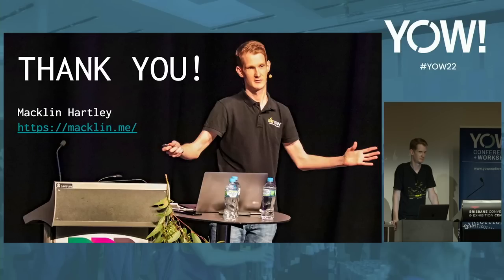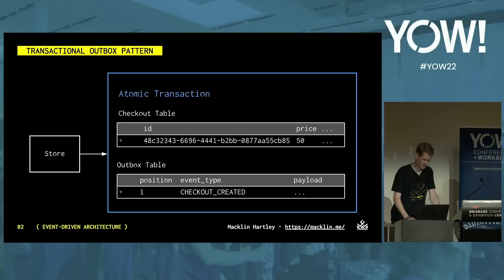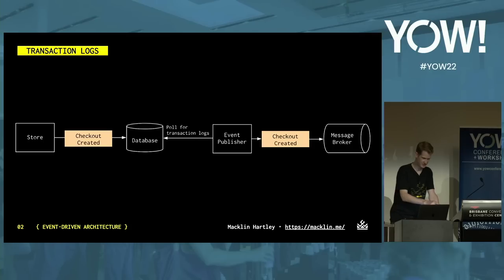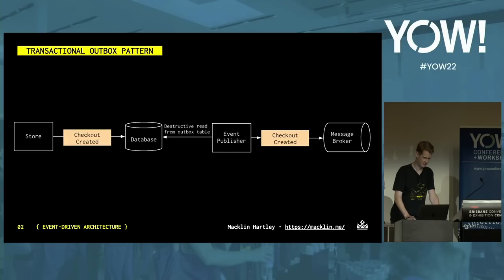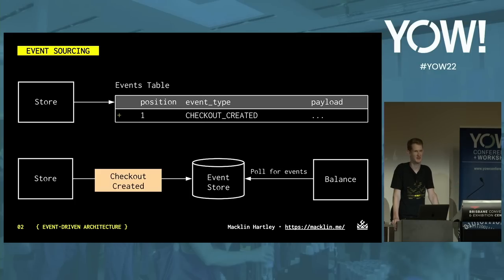Where does a publisher-subscriber model fit into this? When we talk about event-driven architectures, that's one of the most common communication models. You can really append it to any of these models — they produce an event. In this case we have a message broker, but if we wanted to publish those events out for other things to look at, the message broker handles that. And the event-sourced architecture lets services read from the store itself, although you could attach something that publishes those messages for other things to consume.